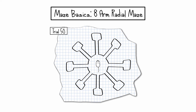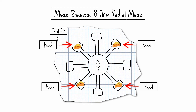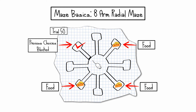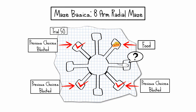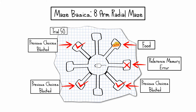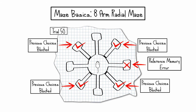Consider this simple task designed to test reference memory. The mouse waits for the doors to open before the 50th trial. It has already done 49 trials in which the same four arms were baited every time. If the mouse correctly goes into one of the baited arms, it can eat the treat. Access to previously chosen arms is denied to prevent working memory errors. If the mouse chooses an arm that has never been baited, it commits a reference memory error. The trial ends when the mouse gets all the food, and the maximum number of reference memory errors per trial is 4.